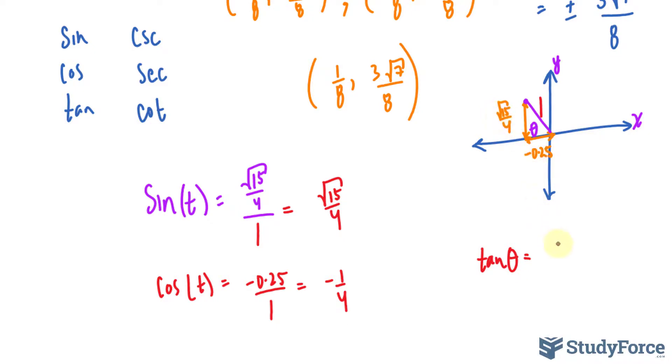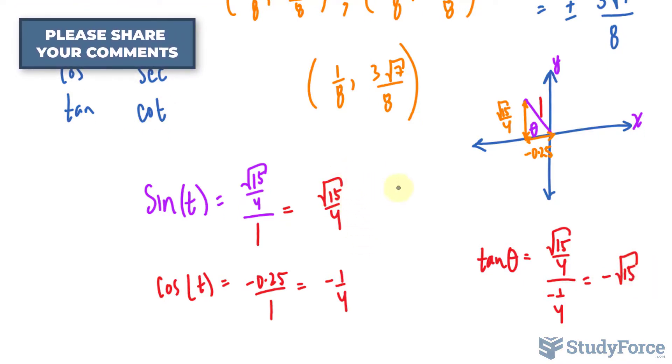So this number over negative 1 quarter. Let me write that down. And this leads us to negative the square root of 15. Now to find these ones, all you do is flip this around.